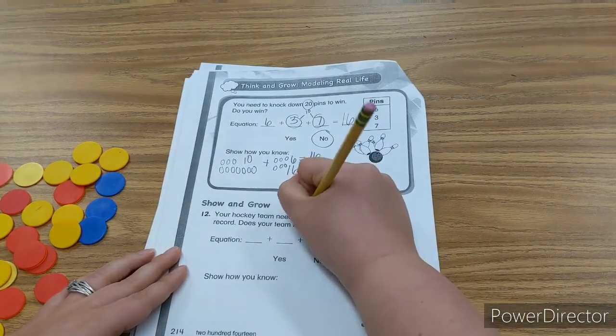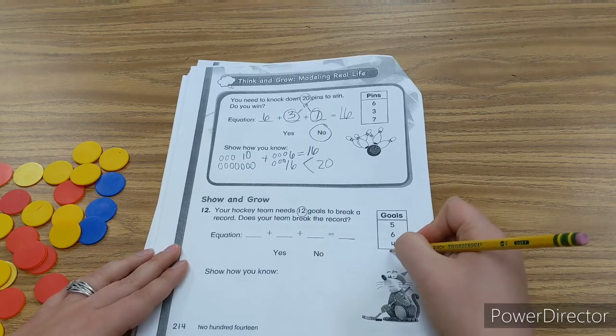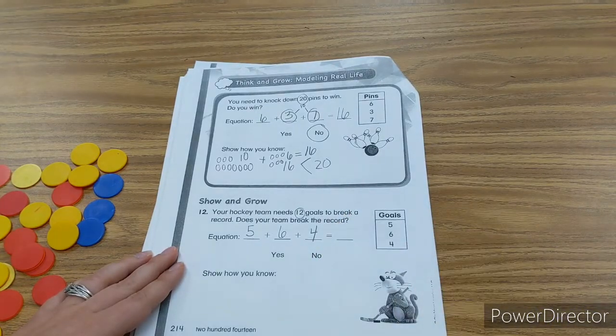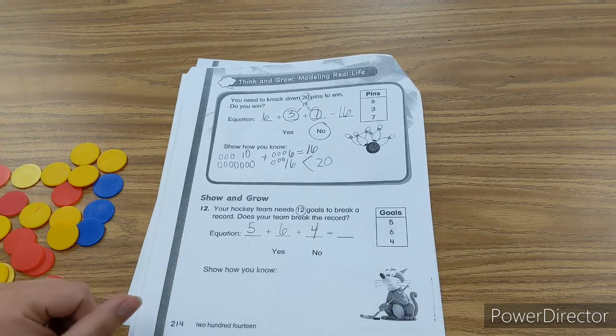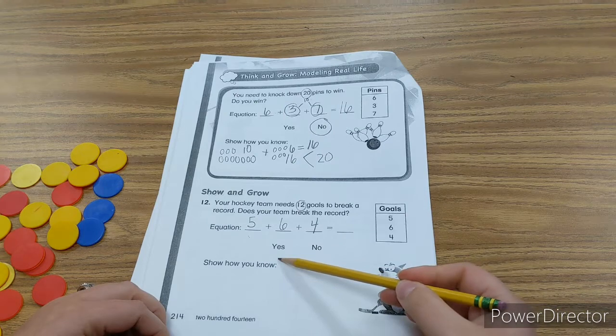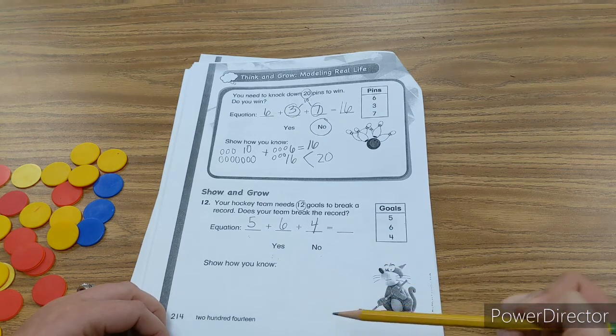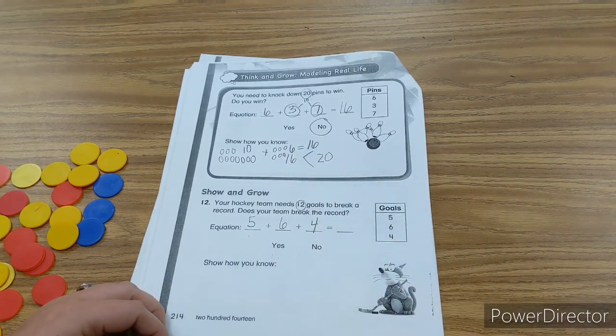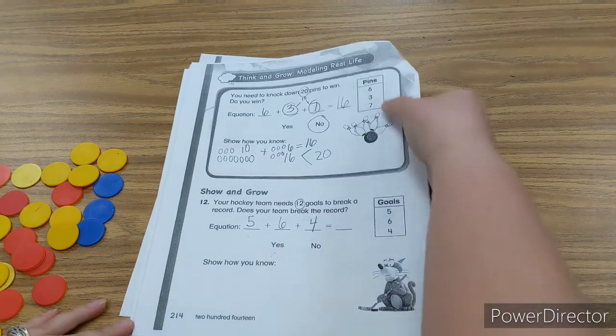Your hockey team needs 12 goals to break a record. Does your team break the record? So here's our goals that we made. We made 5 goals. We made 6 goals. I'm sorry, 4 goals. So 5 goals, 6 goals, 4 goals. Now, I want you to figure out which 2 of those addends equal 10. And then how many all together. I want you to see if you do break the goal or if you do break the record or if you do not break the record. And I want you to show your work. So just like how I did up here, I drew my pictures. I want to see you draw a picture to show me whether you guys break the record or not. So push pause and then push play when you're ready.